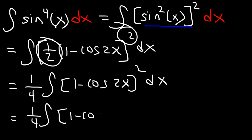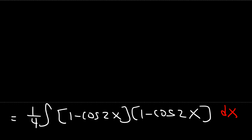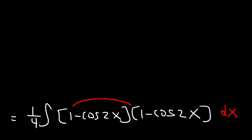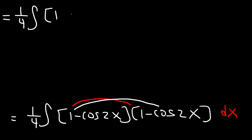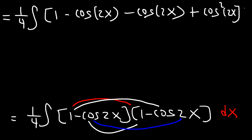I'm going to FOIL (1 minus cosine 2x) with another (1 minus cosine 2x). First we have 1 times 1 which is 1, then 1 times negative cosine 2x, then negative cosine times 1 — that's the same thing — and finally negative cosine 2x times negative cosine 2x, which is positive cosine squared 2x dx.